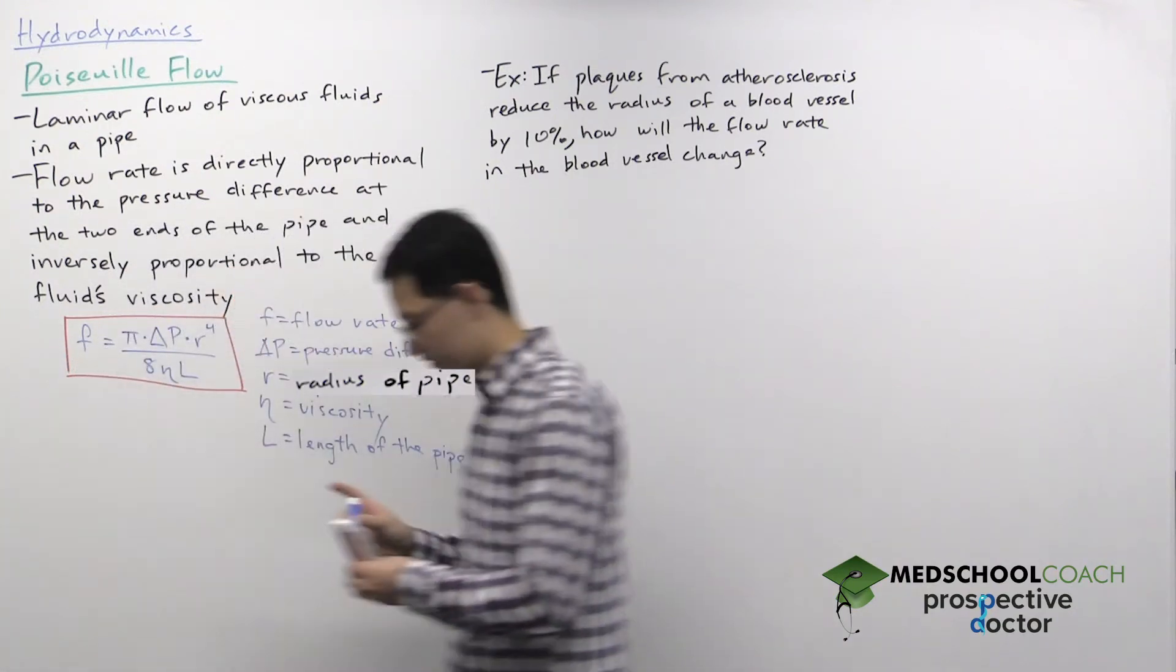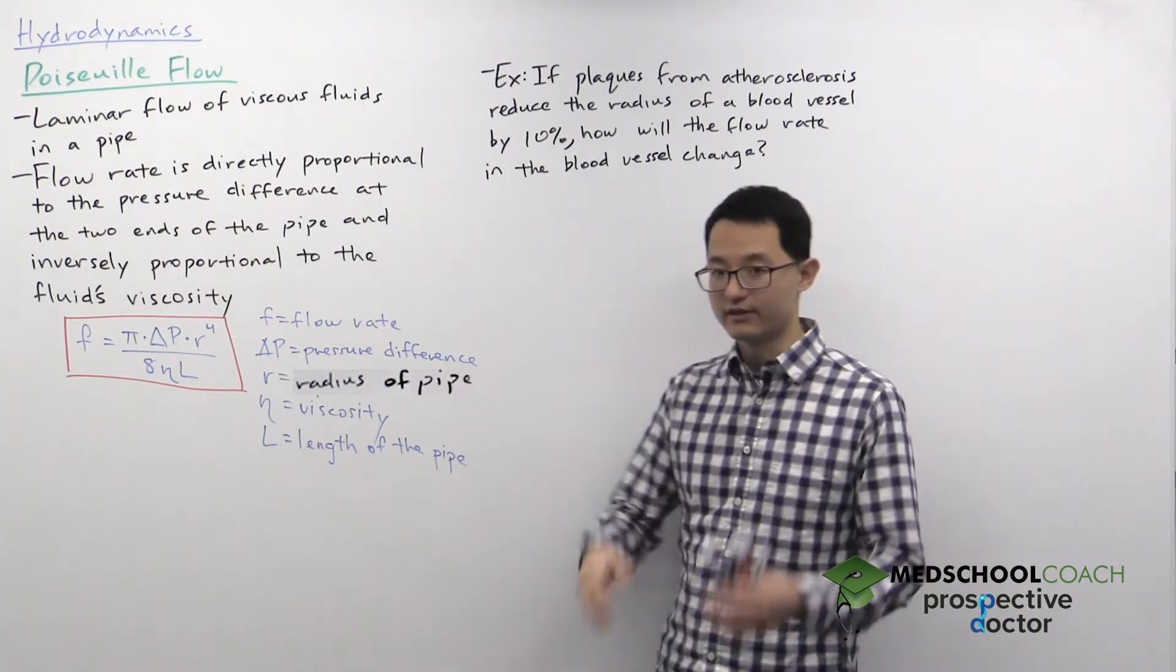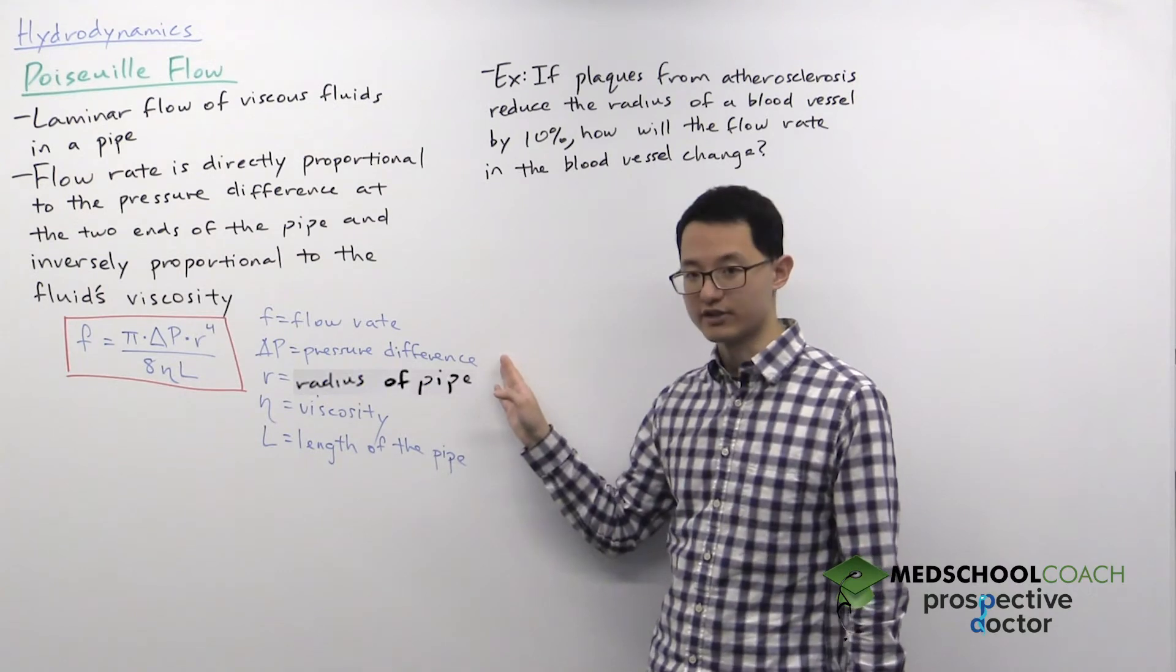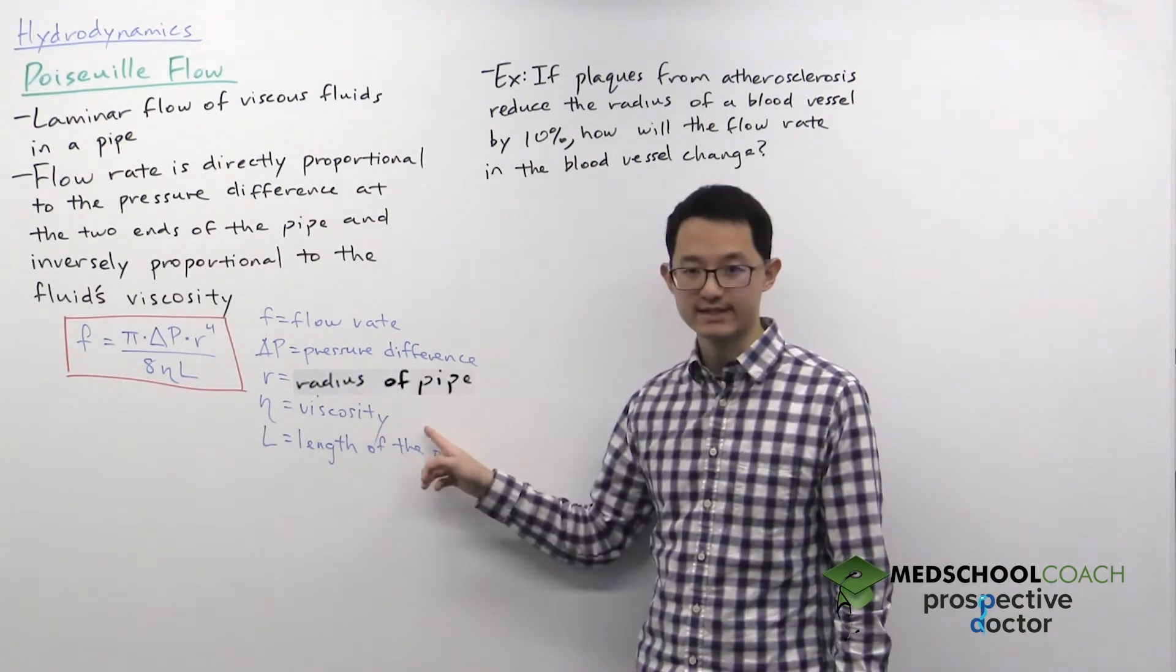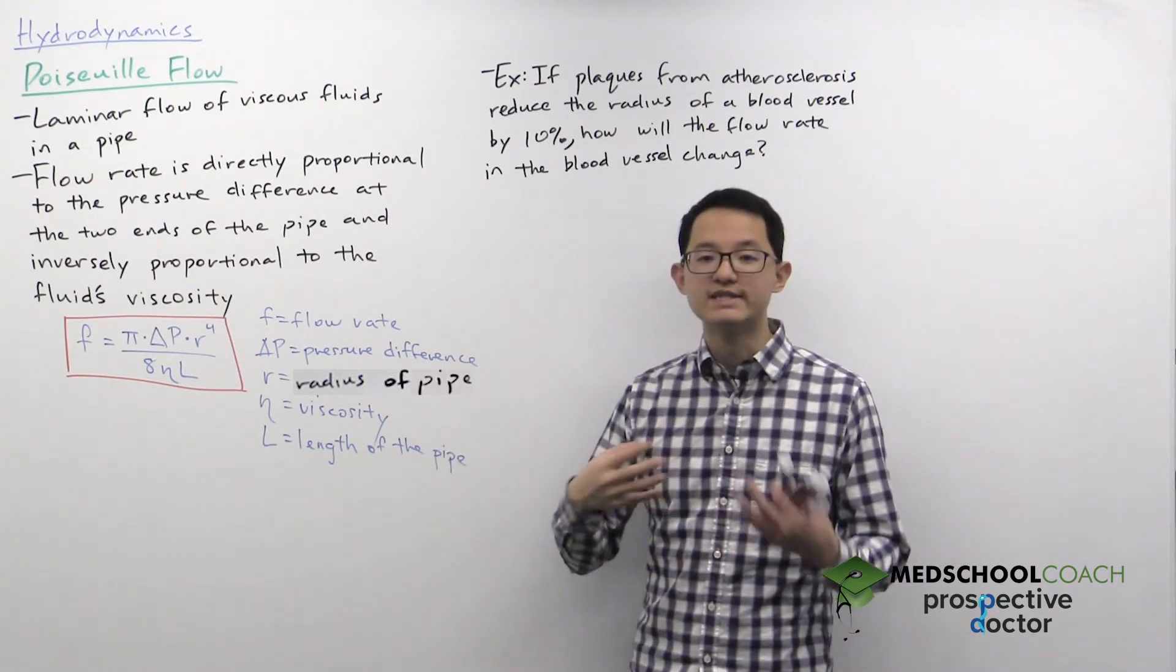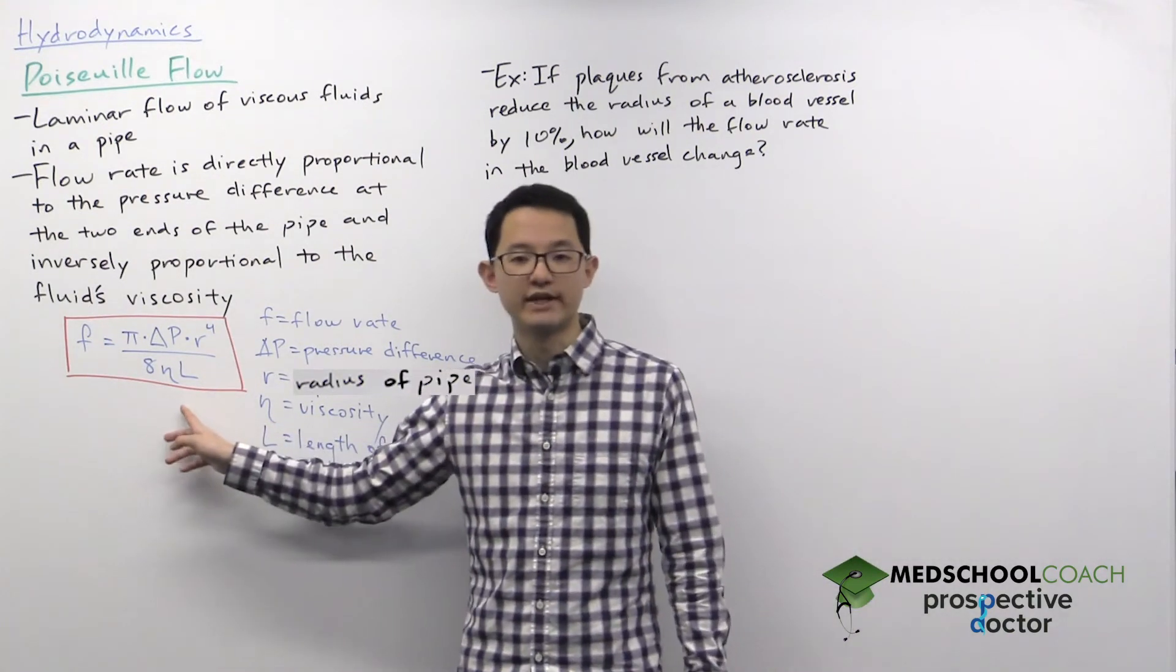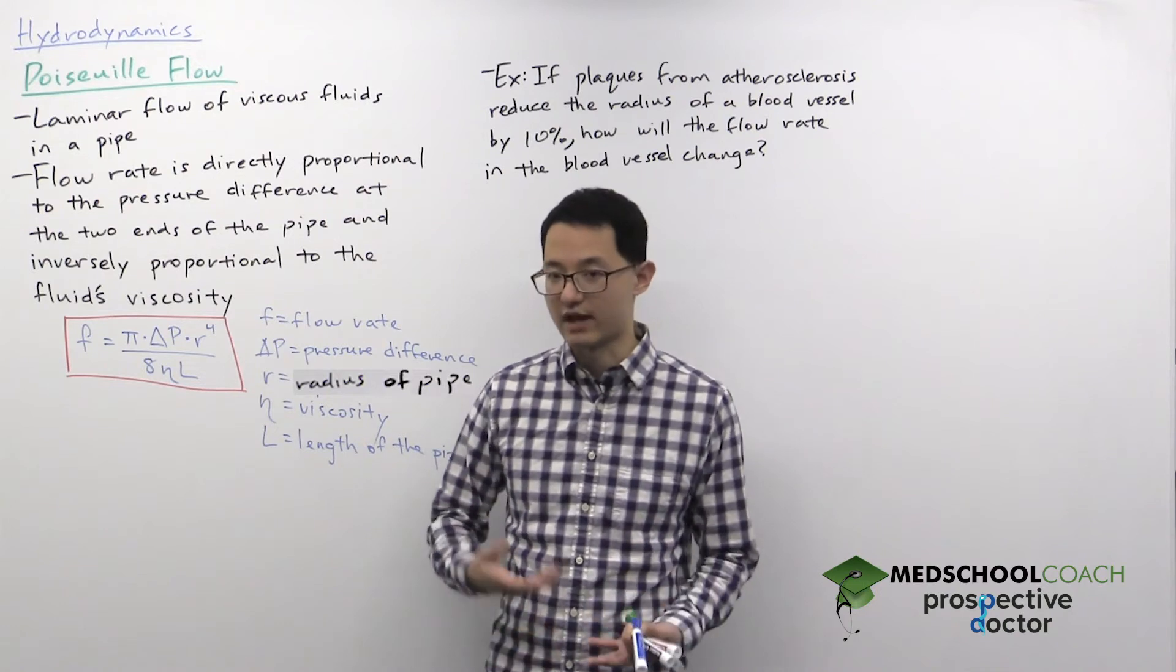Several things for us to consider here. The main ones that we're going to focus on and the important ones for the MCAT is that the flow rate is directly proportional to the pressure difference and inversely proportional to the fluid's viscosity. Viscosity, you can think of it as resistance to fluid flow. So you can see in this equation, the greater the viscosity, the lesser the flow rate. That makes sense.